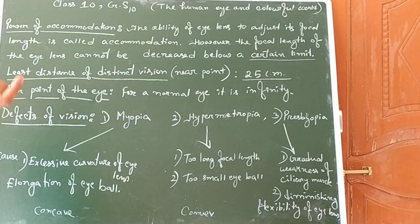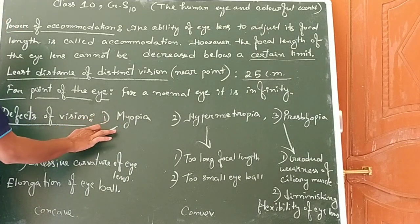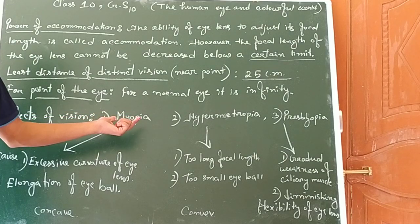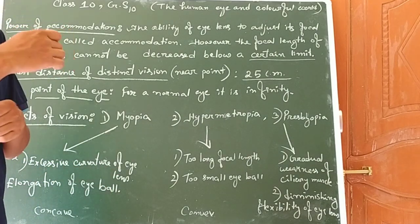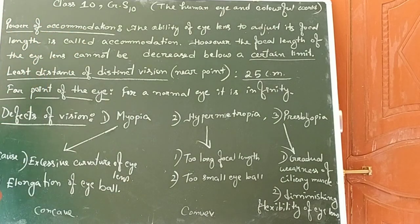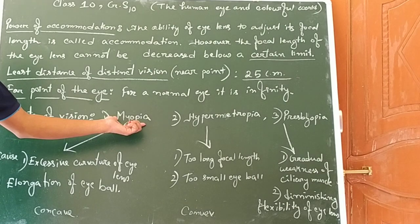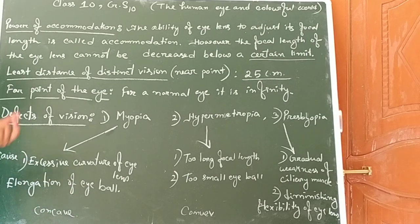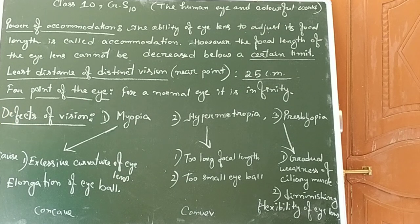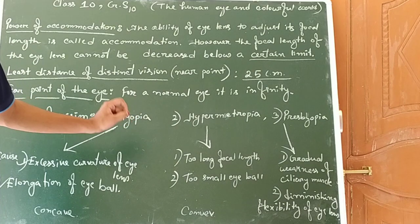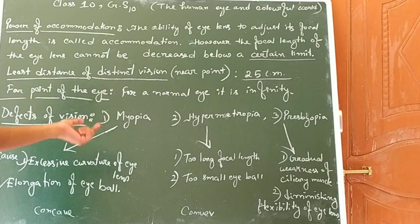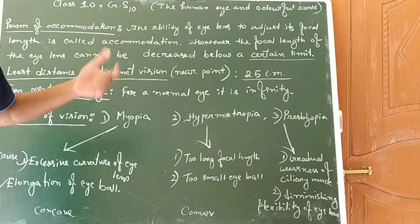What is the cause of myopia? The reason for this defect is excessive curvature of the lens. If the curvature of the lens is very high, myopia occurs. The second cause is elongation of the eyeball — if the eyeball is elongated from its normal position. In a myopic eye, we cannot see distant objects clearly, but we can see nearer objects comfortably.